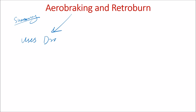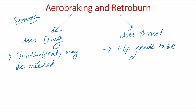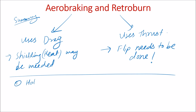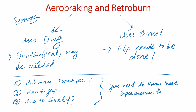In summary: aerobraking uses drag, while retro burn uses thrust. Aerobraking needs heat shielding, and retro burn requires doing a flip in space. Some new questions to explore: What is a Hohmann transfer orbit? How do you flip a spacecraft in space? How do you shield your spacecraft — both heat shielding and radiation shielding? Keep watching future videos to find out the answers. Thanks!